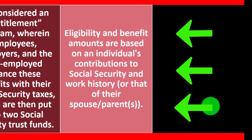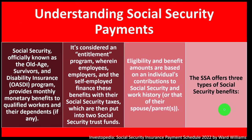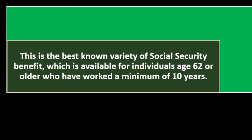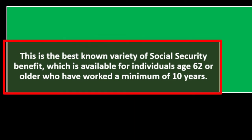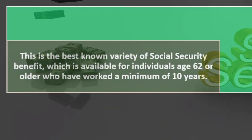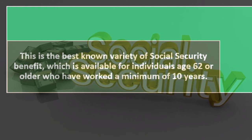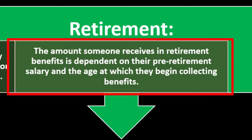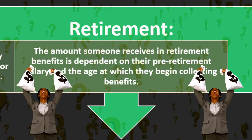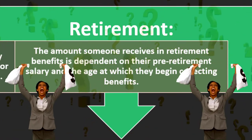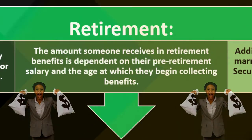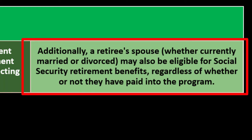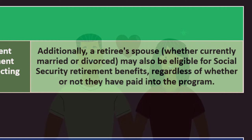The SSA offers three types of Social Security benefits. Retirement is the best-known variety, available for individuals age 62 or older who have worked a minimum of 10 years. The amount received in retirement benefits depends on pre-retirement salary and the age at which you begin collecting. Additionally, a retiree's spouse — whether currently married or divorced — may also be eligible for Social Security benefits, regardless of whether or not they have paid into the program.